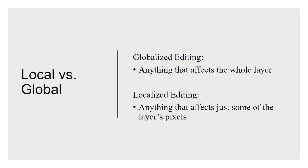Open up Photoshop and follow along. We use these terms occasionally in editing: global editing versus localized editing. Global editing is whatever affects the entire layer. Localized editing is anything that affects just some of the pixels on that layer. For example, a hue saturation adjustment using an adjustment layer will affect all the pixels on the layer. If we want it to be a localized edit, we adjust the layer mask for that adjustment layer.